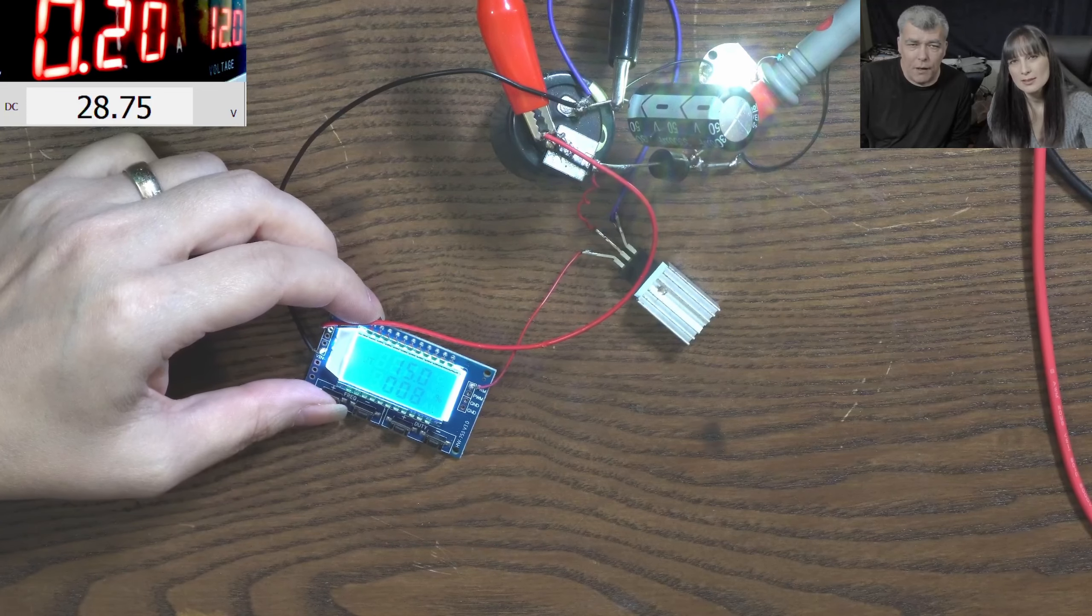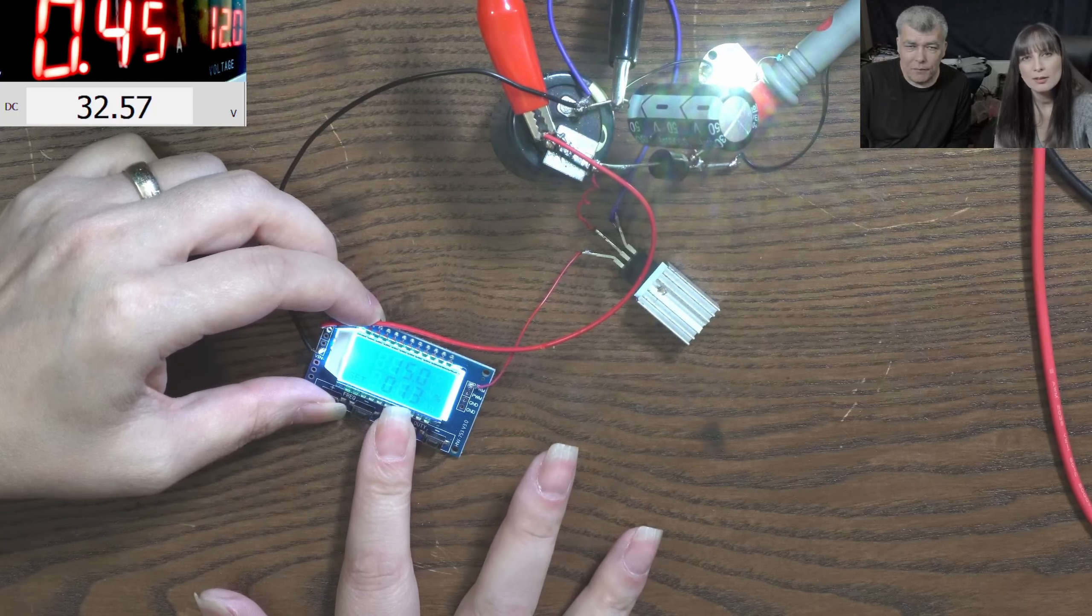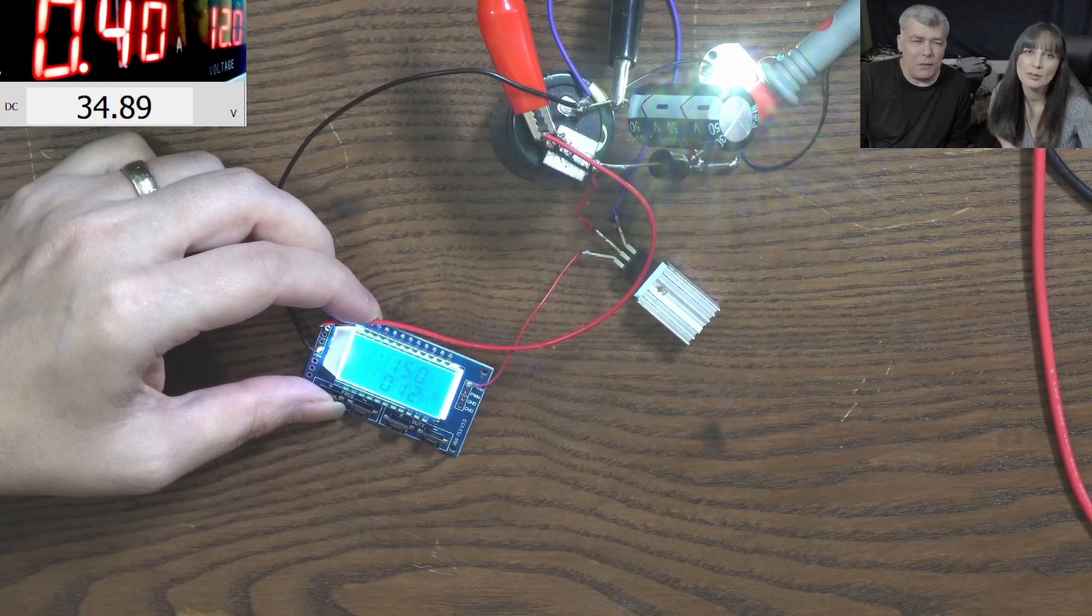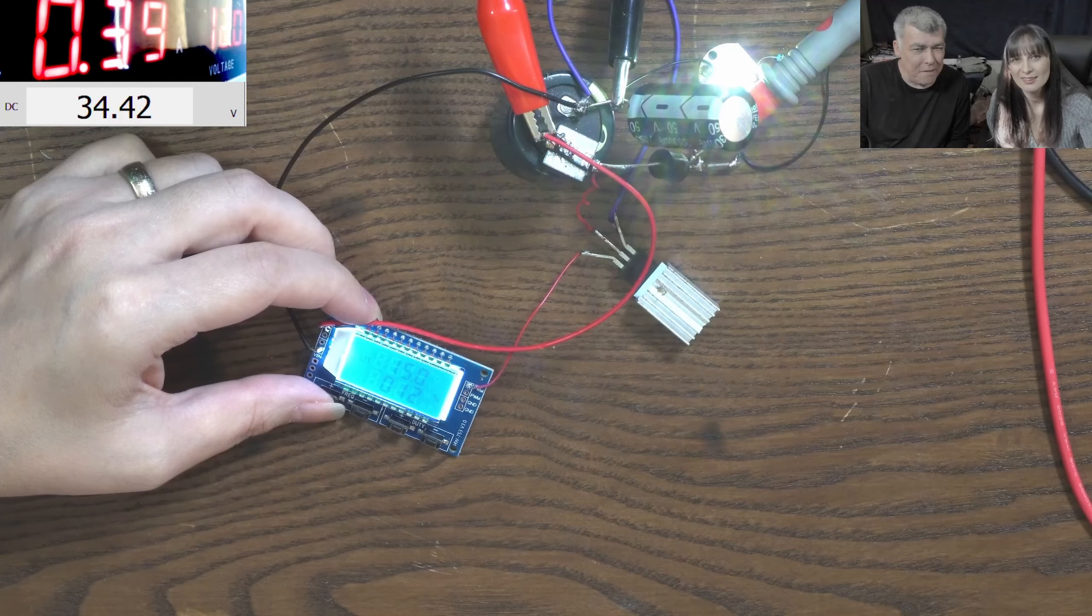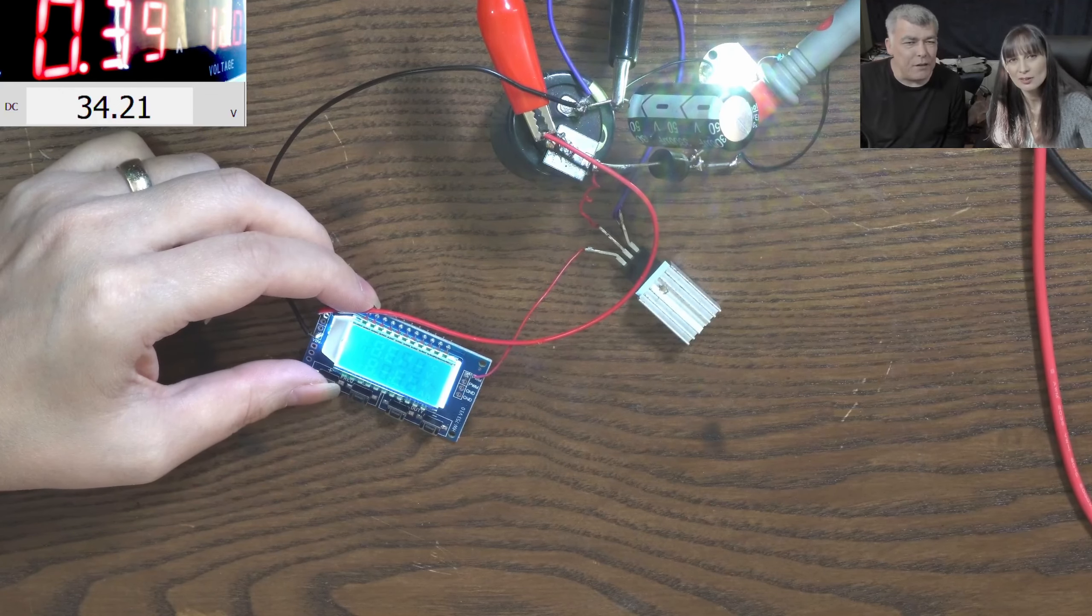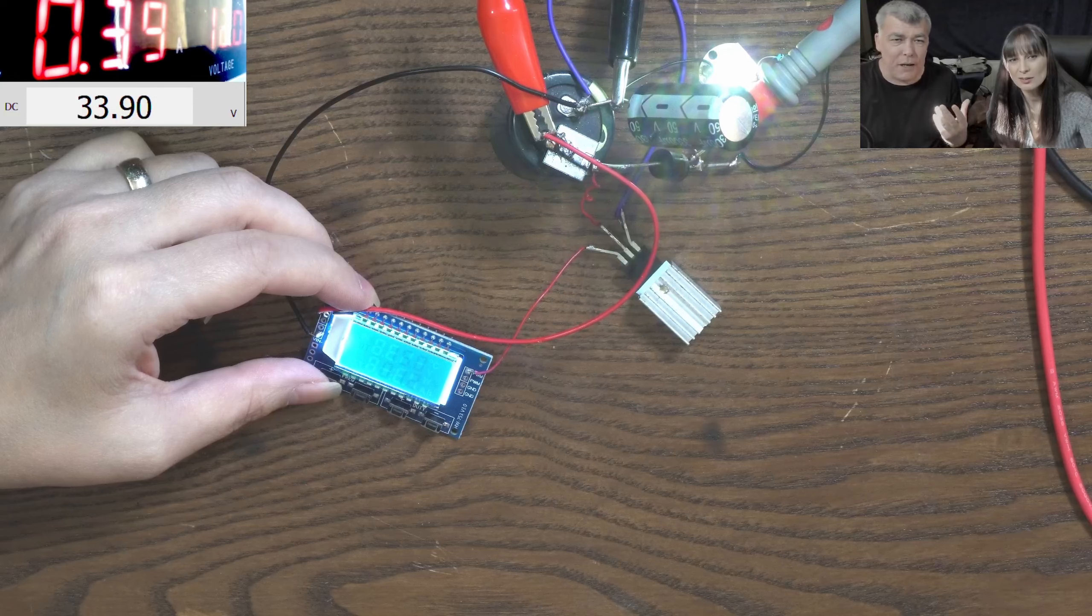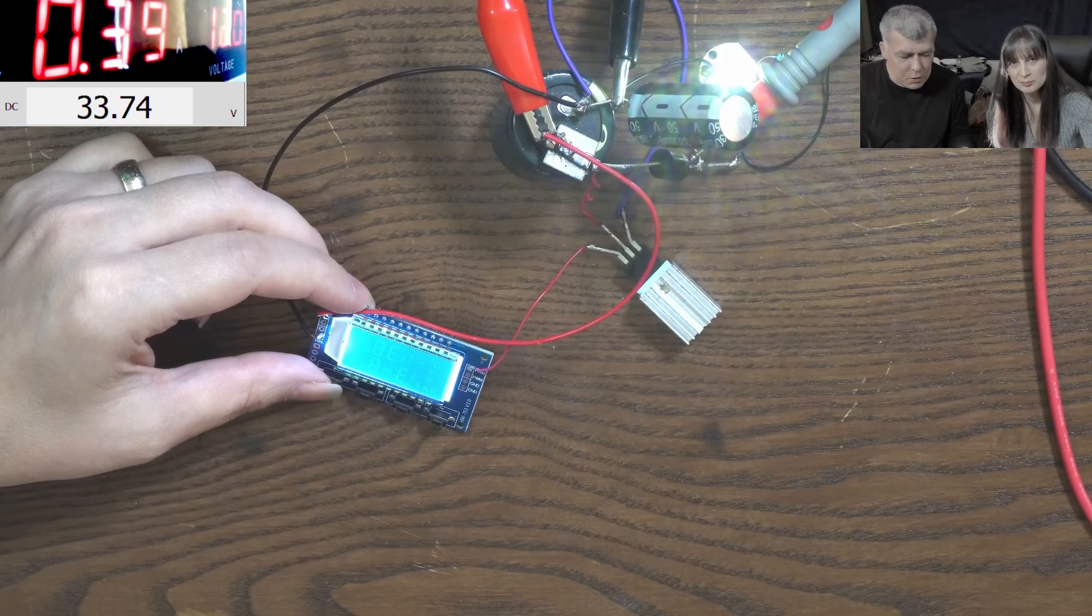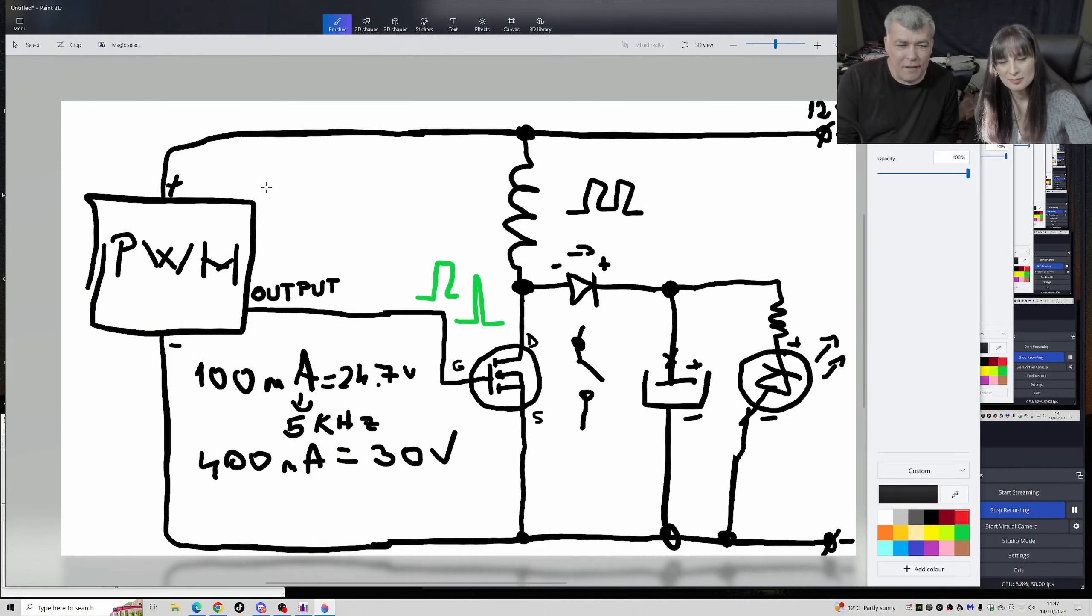Now change the duty cycle, make it 400 milliamps. 400 milliamps, what is the voltage? Now you understand? You have higher voltage just by increasing the frequency. You see the efficiency changed. So with 400 milliamps we have a different efficiency. The voltage is going down because the MOSFET is getting hot. But just to understand how the efficiency works. So at 15k we have 34 volts.